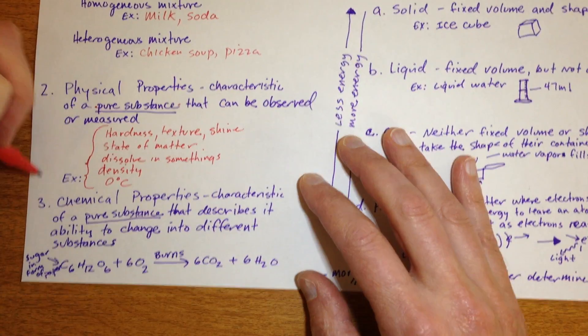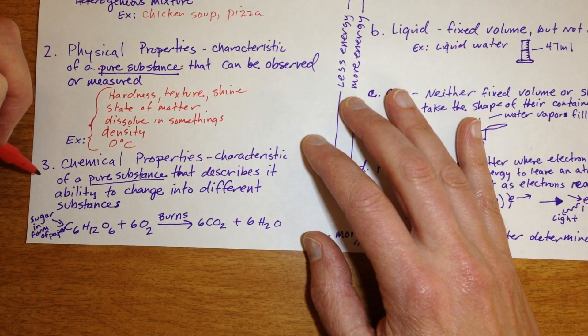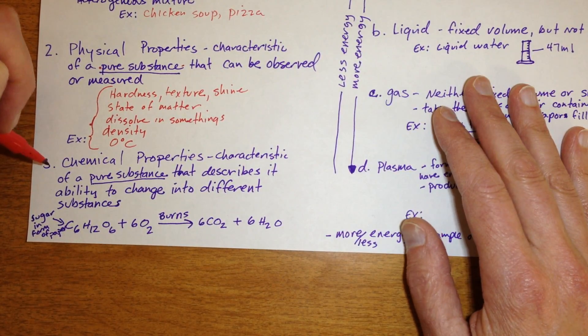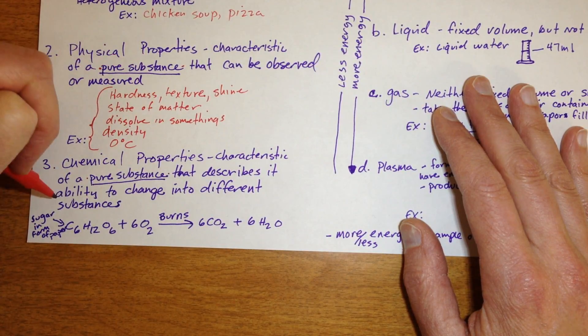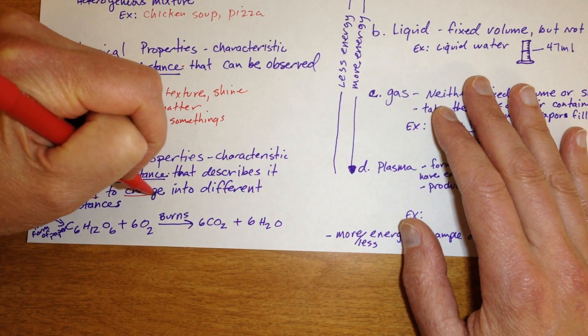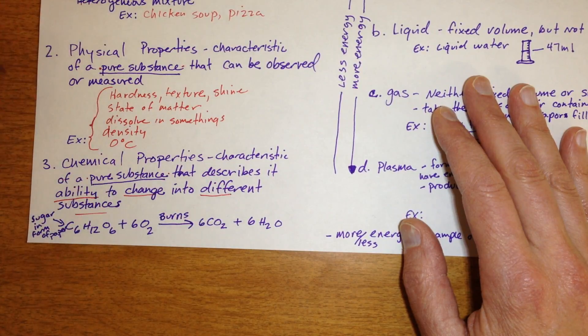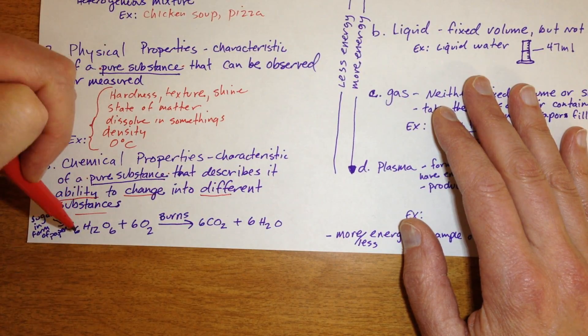Physical properties contrast with chemical properties, which we don't spend too much time with in this class, but chemical properties, again, characteristics of pure substances, like before, that describe its ability to change into different substances. So there you're talking about chemical reactions.